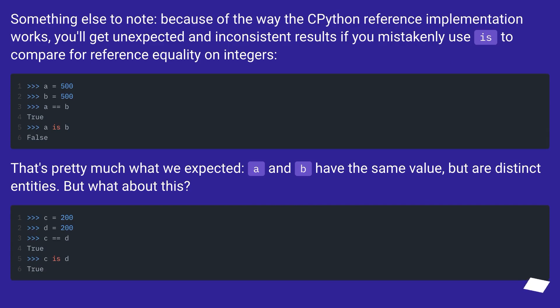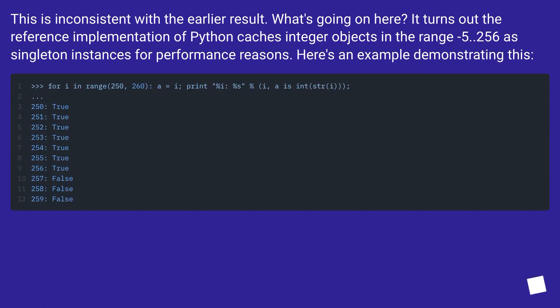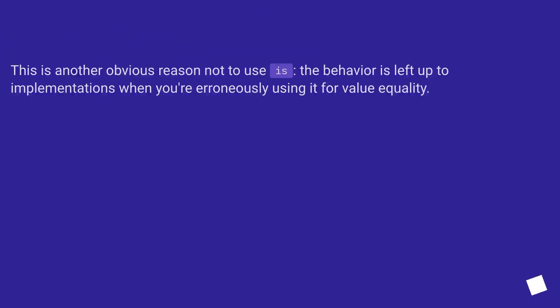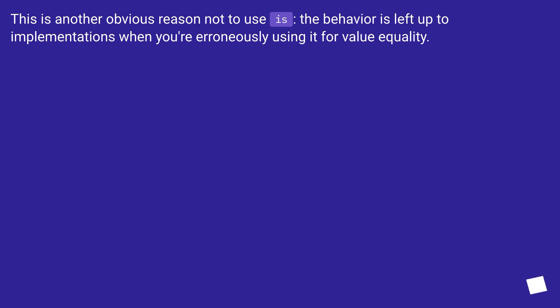Something else to note, because of the way the Python reference implementation works, you'll get unexpected and inconsistent results if you mistakenly use is to compare for reference equality on integers. That's pretty much what we expected, A and B have the same value, but are distinct entities. But what about this? This is inconsistent with the earlier result. What's going on here? It turns out the reference implementation of Python caches integer objects in the range -5 to 256 as singleton instances for performance reasons. Here's an example demonstrating this. This is another obvious reason not to use is. The behavior is left up to implementations when you're erroneously using it for value equality.